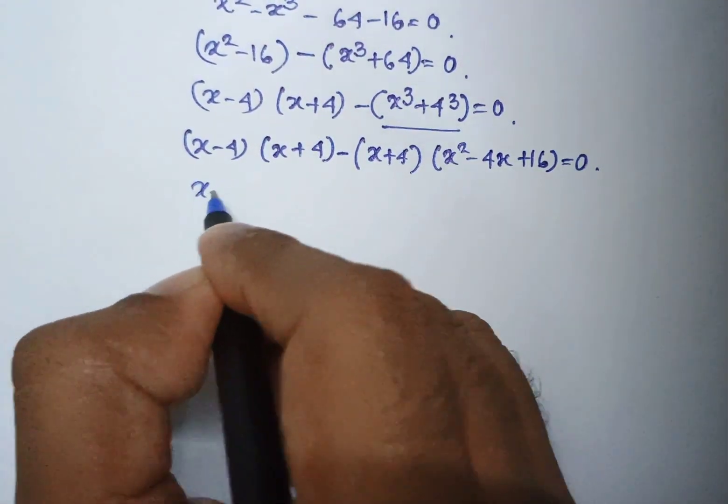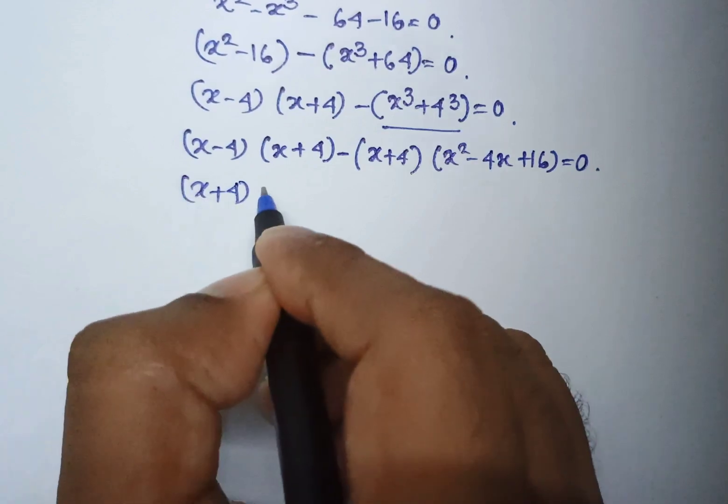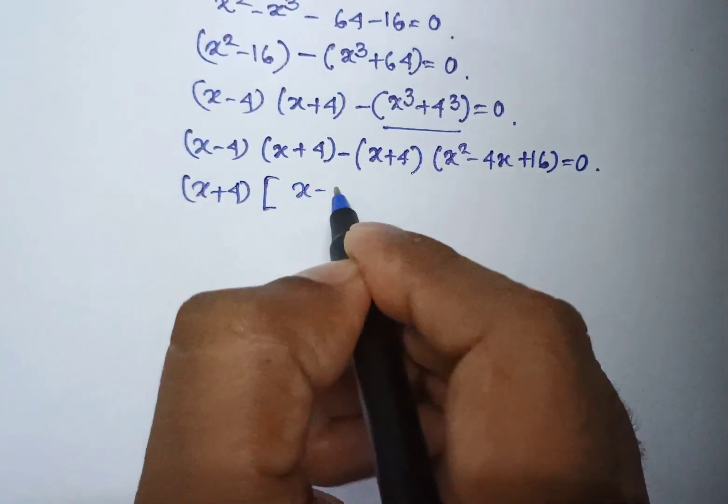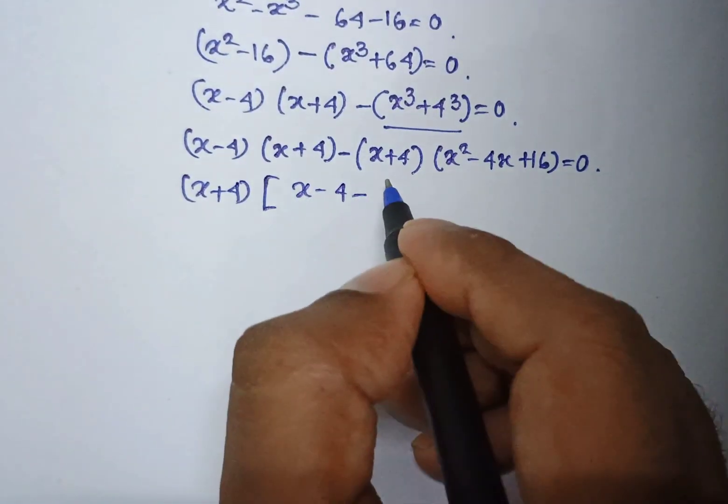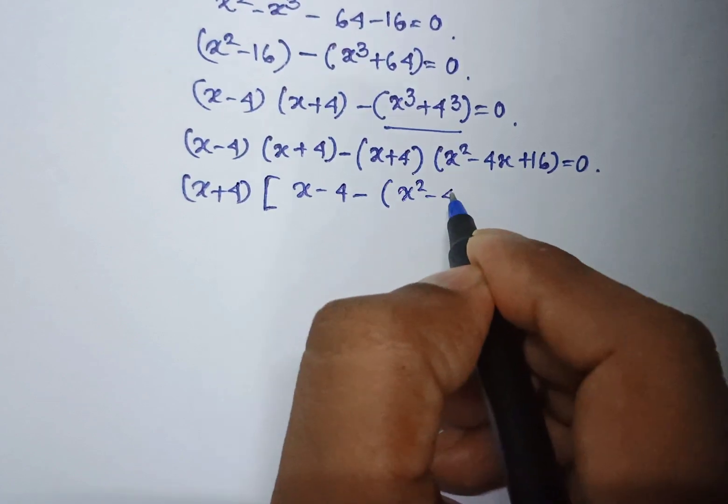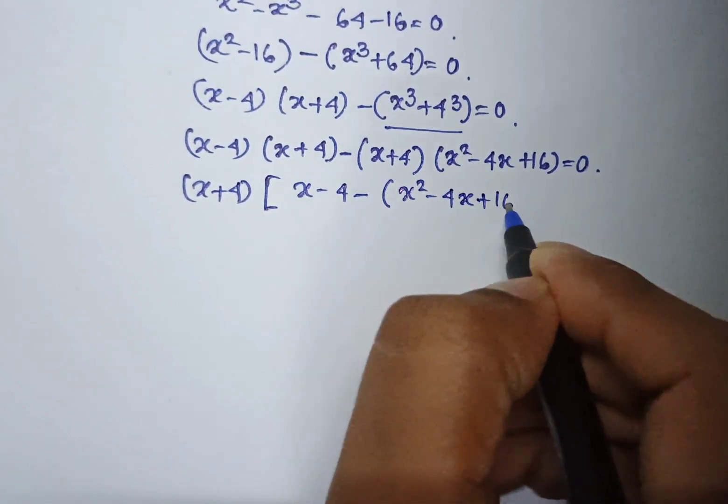So, x plus 4 can be taken common. Within bracket it becomes x minus 4 minus x square minus 4x plus 16 equal to 0.